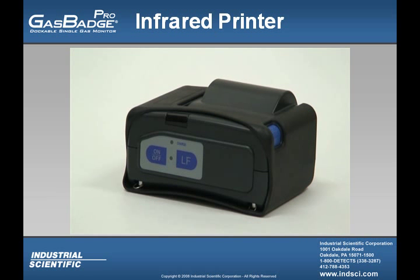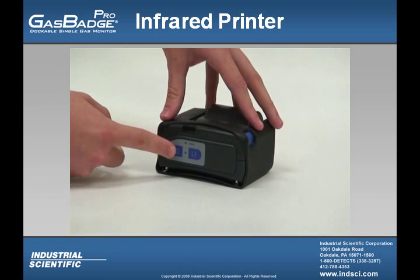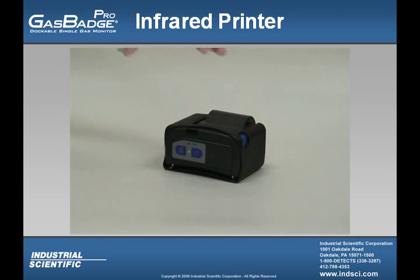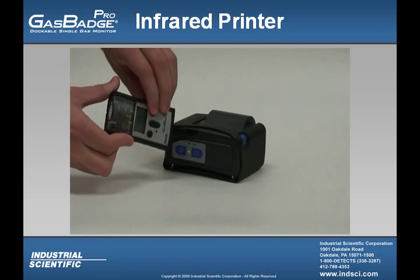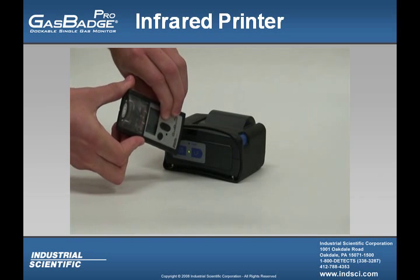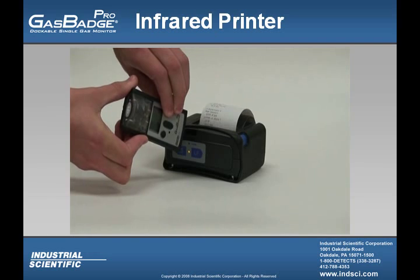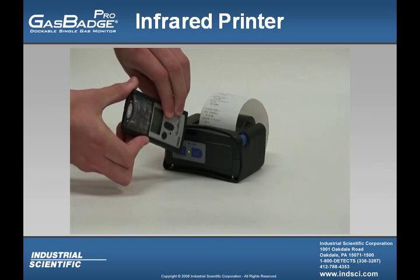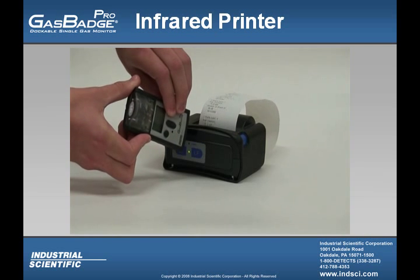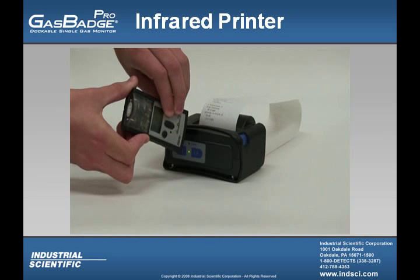Here is a video on how to print out the last 15 alarm events within the Gas Badge Pro using the Infrared Printer. First, make sure the Infrared Printer is turned on, and then make sure the Gas Badge Pro is in the Initiate Print screen. Aim the Gas Badge Pro's Infrared Port at the Infrared Port on the printer, then press the Enter button. Wait to move the Gas Badge Pro until the printer is done printing out all of the alarm events. You will then have a printout of the last 15 alarm events.